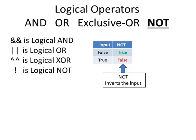The logical NOT only has one input. Whatever comes in gets complemented. So if it's a true, then it's going to make the result a false. And if it was false, it's going to make it true.